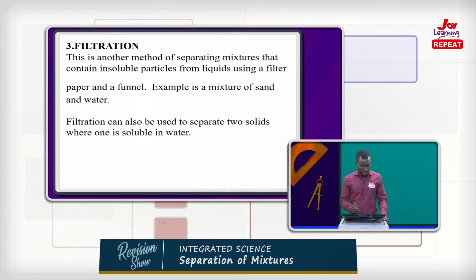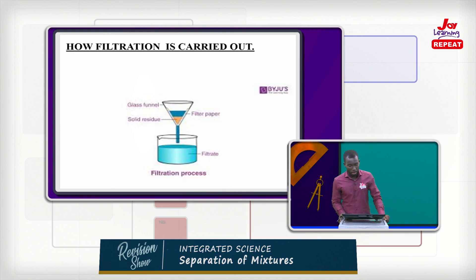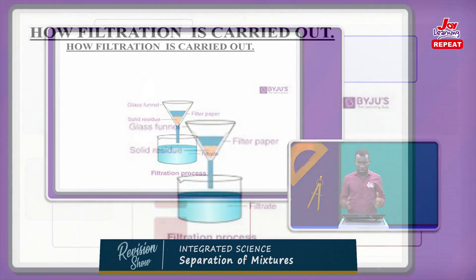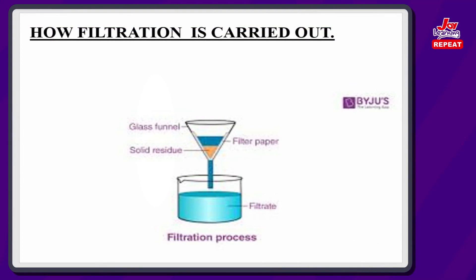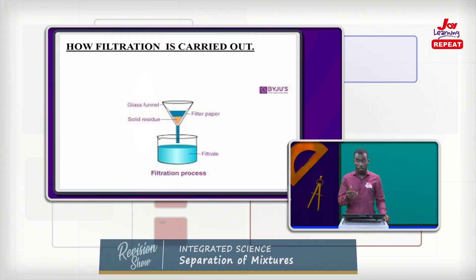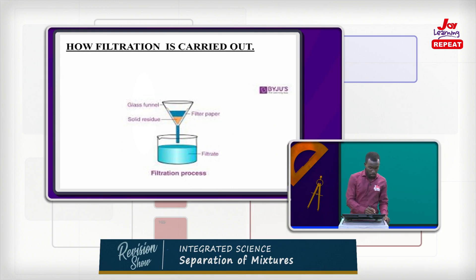This is a clear diagram for filtration. We have our funnel, filter paper, and beaker. We make a mixture of sand and water in a different container, then pour it through the funnel containing the filter paper. As it goes through, the sand particles — which don't dissolve completely — settle on the filter paper, and the solvent slowly passes through as the filtrate. Whatever remains on the filter paper is called the residue, and what passes through into the beaker is called the filtrate.